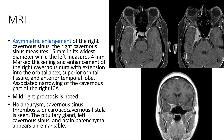On MRI, we see marked thickening as well as enhancement of the right cavernous dura, with extension into the orbital apex, the superior orbital fissure, and the anterior temporal lobe.